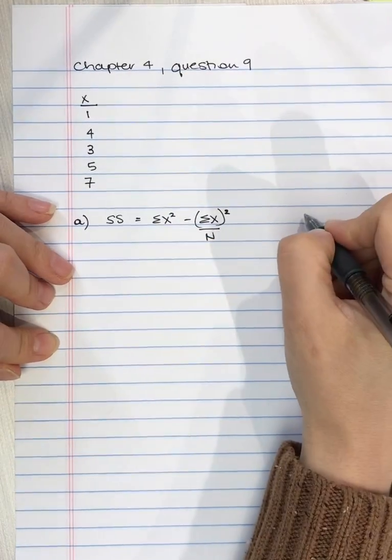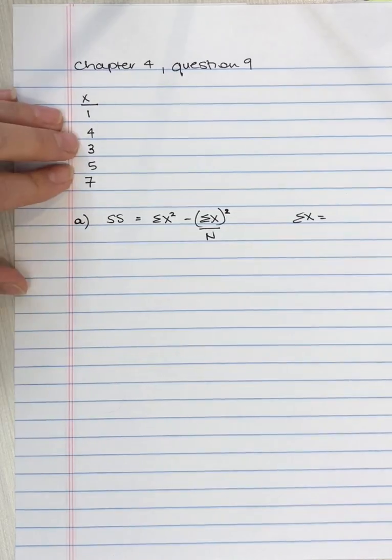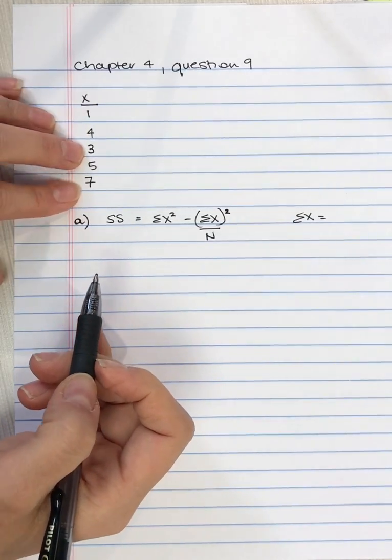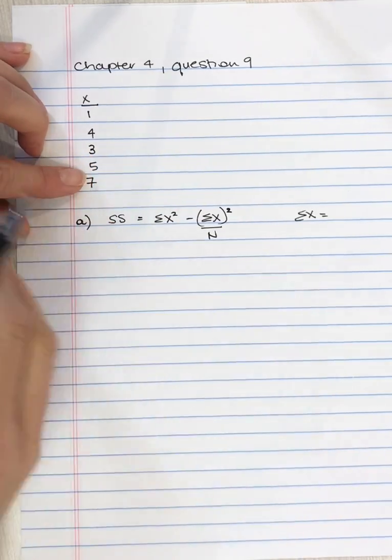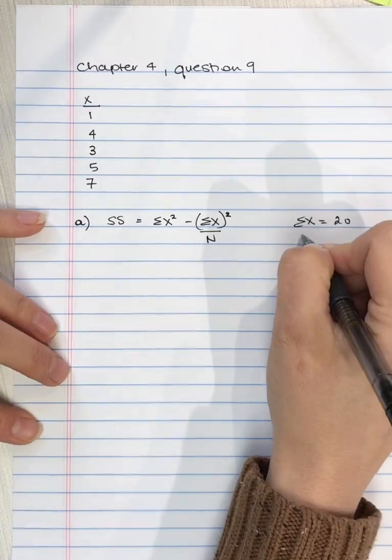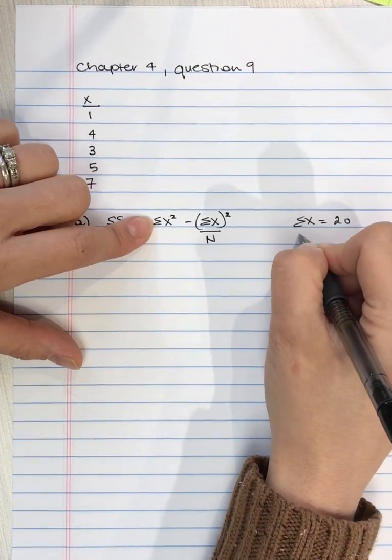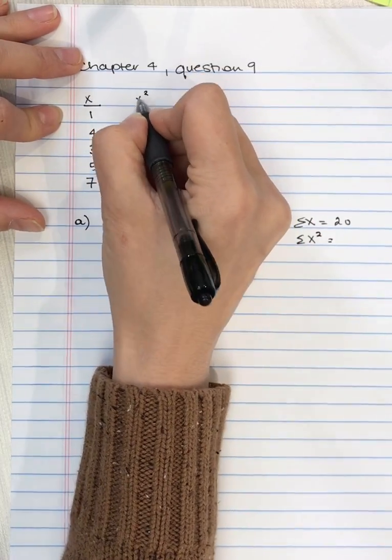So we need to calculate the sum of x, which is adding all of these values up. So 1 plus 4 is 5, plus 3 is 8, plus 5 is 13, plus 7 is 20. We also need this value, the sum of the x squared, so that requires that we have another column.